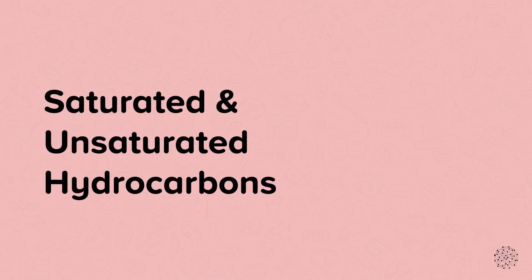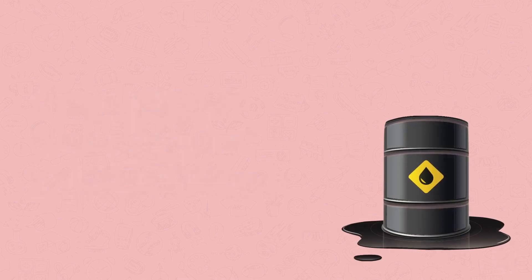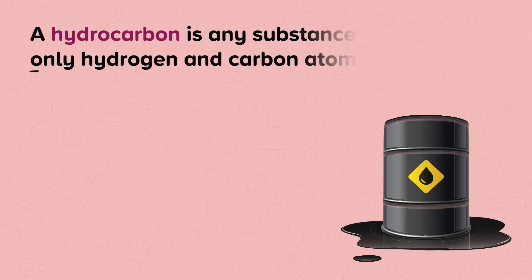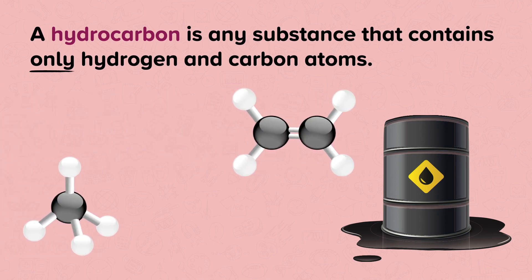Saturated and unsaturated hydrocarbons. Most of the compounds in crude oil are hydrocarbons. A hydrocarbon is any substance that contains only hydrogen and carbon atoms. So both alkanes and alkenes are hydrocarbons.